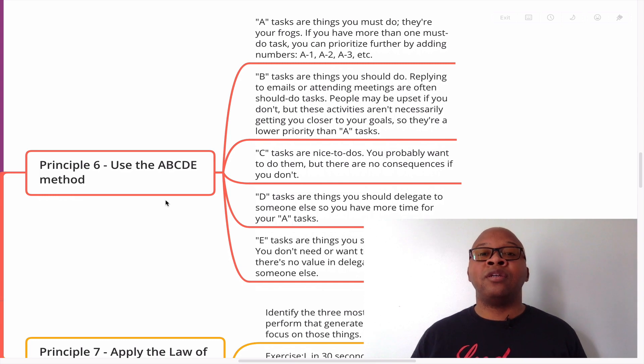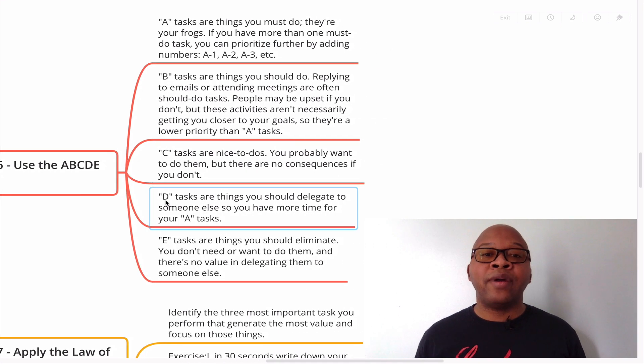So A tasks are things you must do. They're your frogs. If you have more than one must do task, you can prioritize further by adding A1, A2, A3. B tasks are things you should do. Replying to emails or attending meetings are often should do tasks. People may be upset if you don't, but these activities aren't necessarily getting you closer to your goals. So they're a lower priority than A tasks.